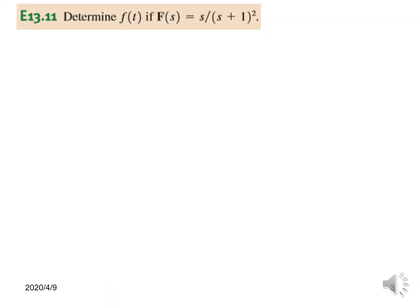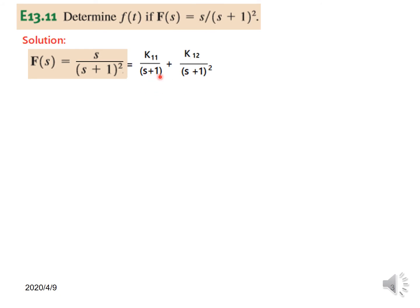Now let's look at the first problem, 13.11. We write F(s) in partial fraction form. Since (s+1) has power 2, we have two factors: k11 over (s+1) and k12 over (s+1)². We start with the highest power, so we find k12 first. Multiply by (s+1)² and substitute F(s); the (s+1)² terms cancel, leaving s. We apply the condition s=−1.